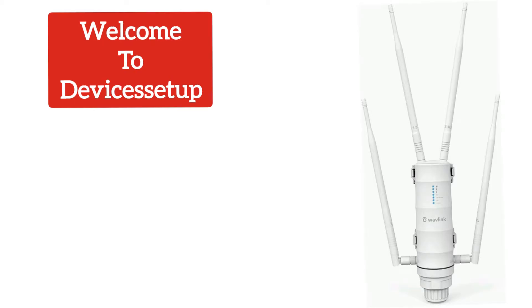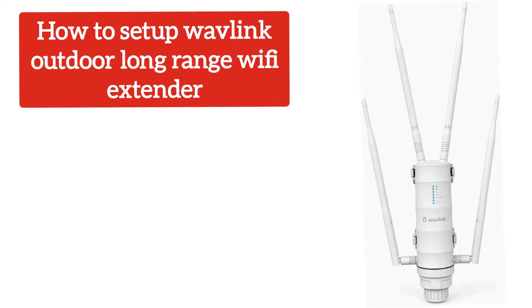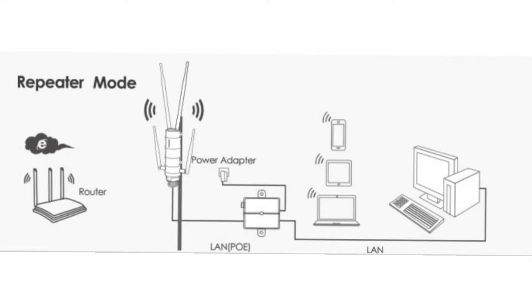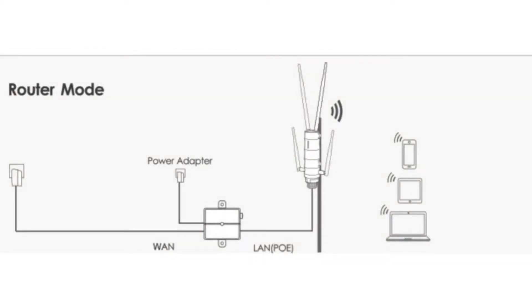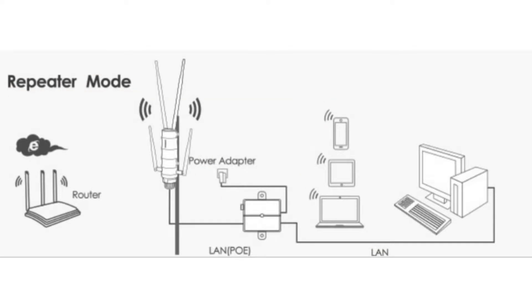Welcome back to Device Setup Channel. Today we will learn how to set up the Wavelink Outdoor 1200 long-range WiFi extender as a repeater, access point, and router mode. First, we will start with repeater mode. This video works for all Wavelink long-range extender models.